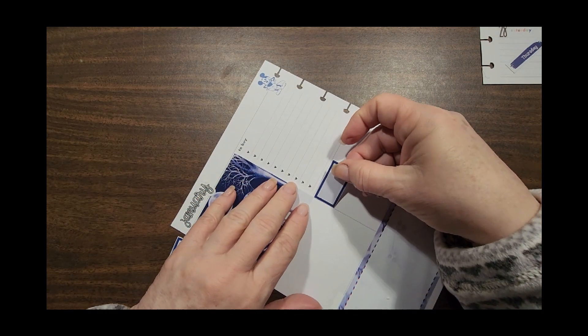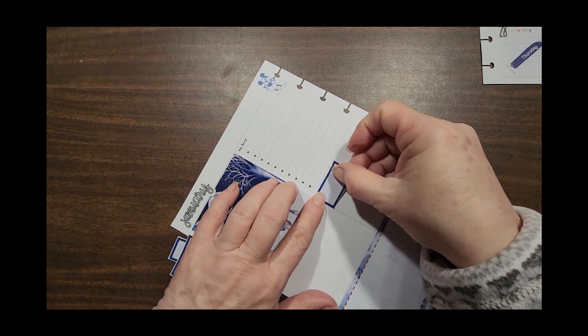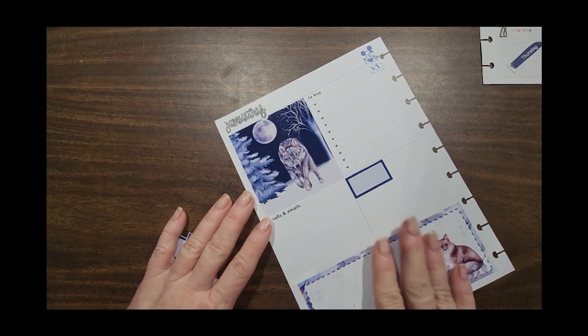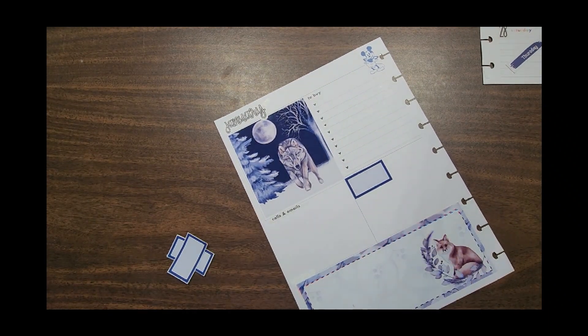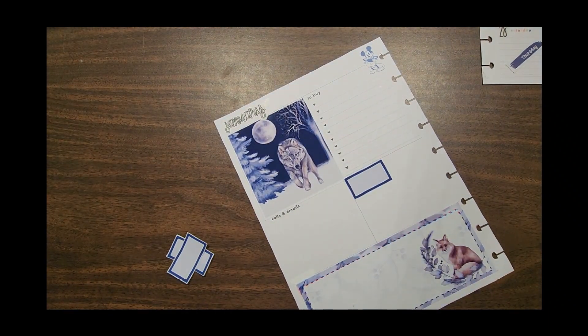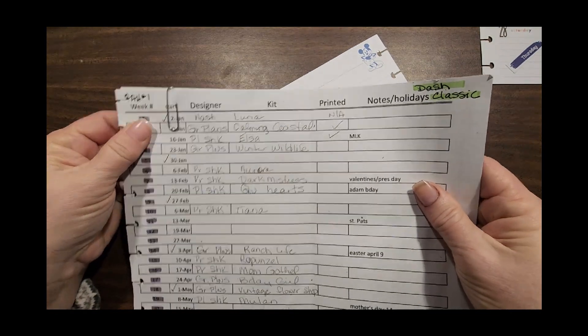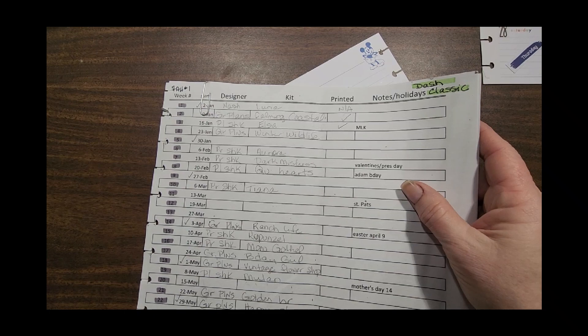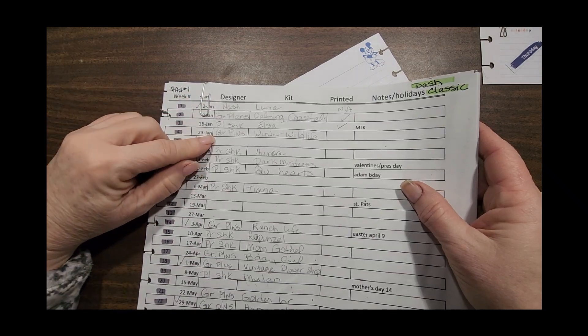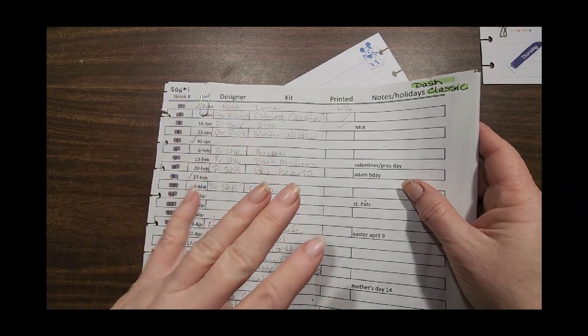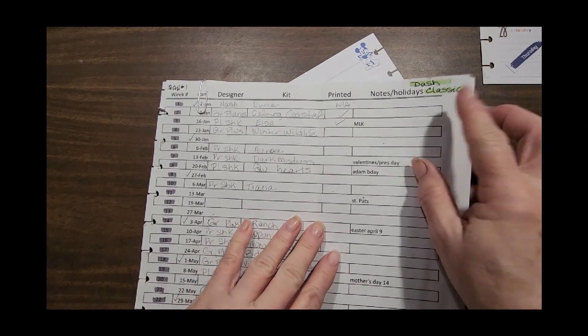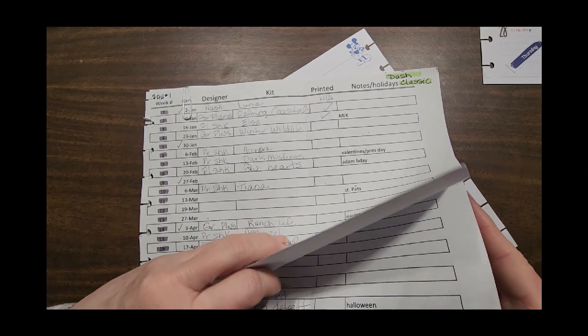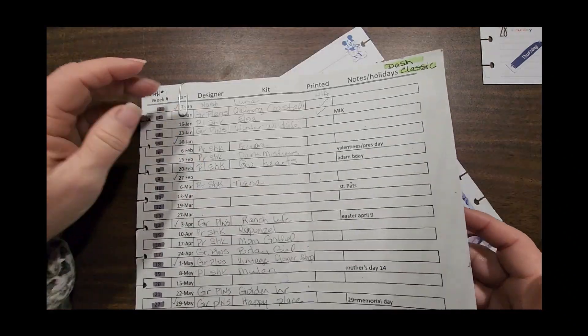Speaking about theme, if you didn't see in my last video, this is a chart that I made for the items I either purchased or I'm going to print for the entire year for my dashboard.